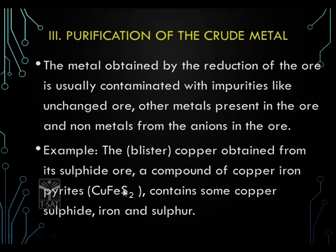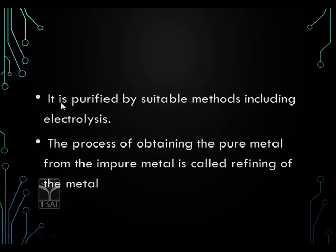For example, let us see blister copper. The copper obtained from its sulphide ore — copper iron pyrite — contains copper, iron and sulphur. The impurities present are iron and sulphur, so it contains some copper sulphide, iron and sulphur. We have to separate iron and sulphur using suitable methods including electrolysis. The process of obtaining pure metal from impure metal is called refining of the metal.